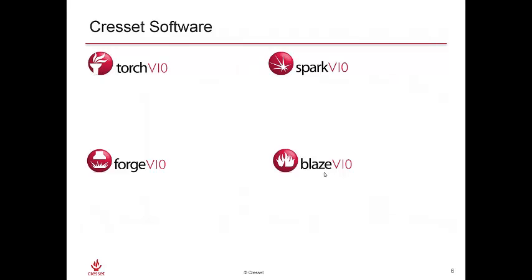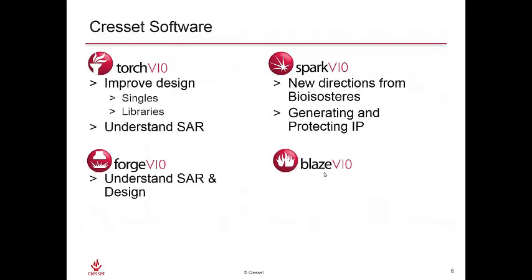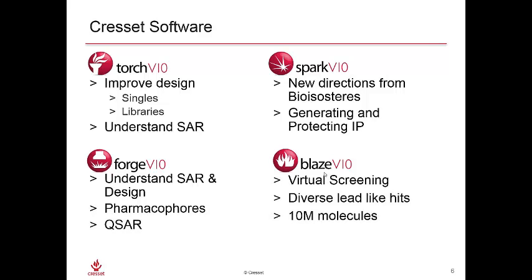We do these comparisons with four products: Torch, Spark, Forge, and Blaze. Blaze is for virtual screening. Spark is for bioisostere replacement and scaffold hopping. Torch and Forge are for design and understanding structure activity relationships. Torch is a medicinal chemistry tool; Forge is a computational chemistry tool which includes the Torch functionality, but also additional functionality including pharmacophore templating and three-dimensional QSAR.